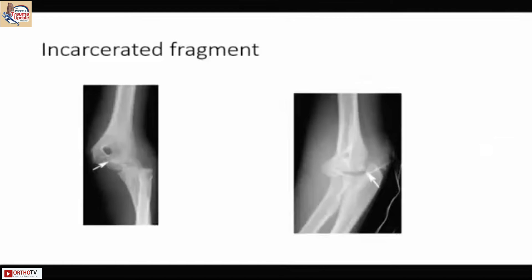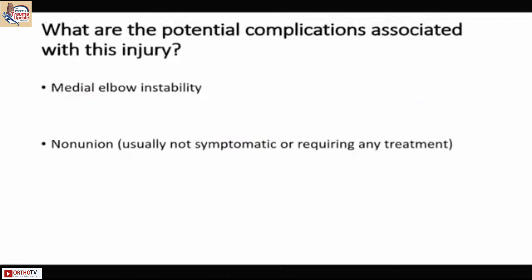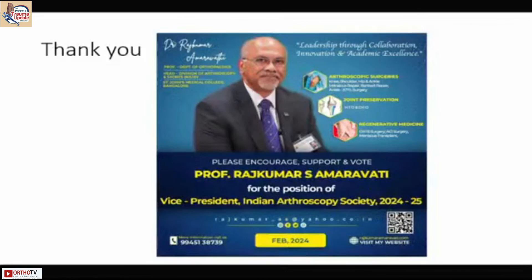We should not take it for granted. The incarcerated fragment goes inside the joint and can be totally missed. If you don't identify and treat them, complications include non-union or major instability of the elbow. My take-home message is: have an index of suspicion for any elbow injury in a child. On clinical examination, you will notice medial hematoma, skin changes, and edema. With dynamic examination you can get all the information you are looking for, and an opposite x-ray is a simple and quite often helpful tool. Displaced fractures are always managed with intervention — a K-wire or open reduction. Thank you.